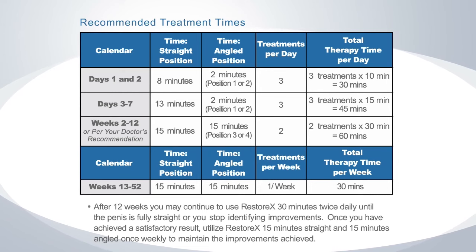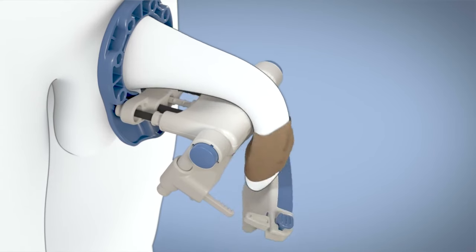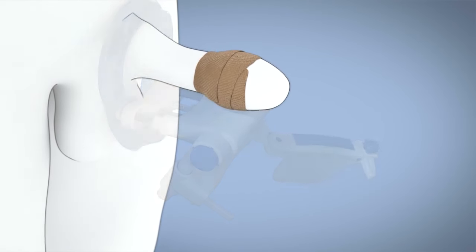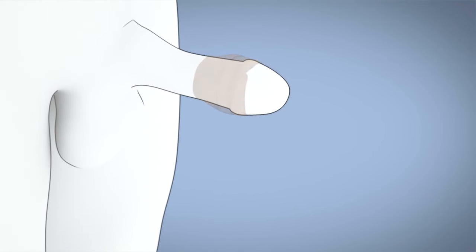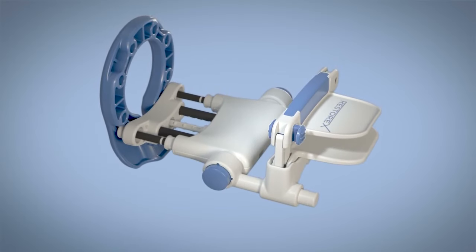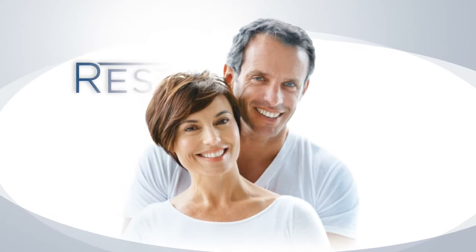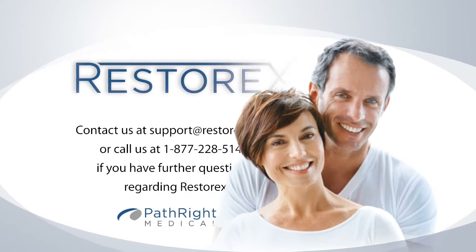The following chart contains the recommended treatment times for Restorex. Start slowly during the first week of use, working your way up to two 30-minute treatments per day. At the end of the treatment time, simply open the clamp, remove Restorex, and remove the self-adherent wrap if used. Remember to always store with the springs untensioned. Read the instructions completely prior to use and use only as directed.